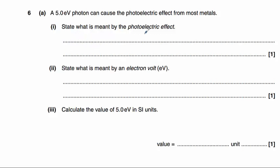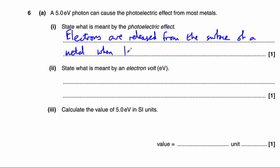Question number six is about the photoelectric effect. I'll begin by stating what is meant by the photoelectric effect. So it is when electrons are released from the surface of a metal when light photons are incident on it.